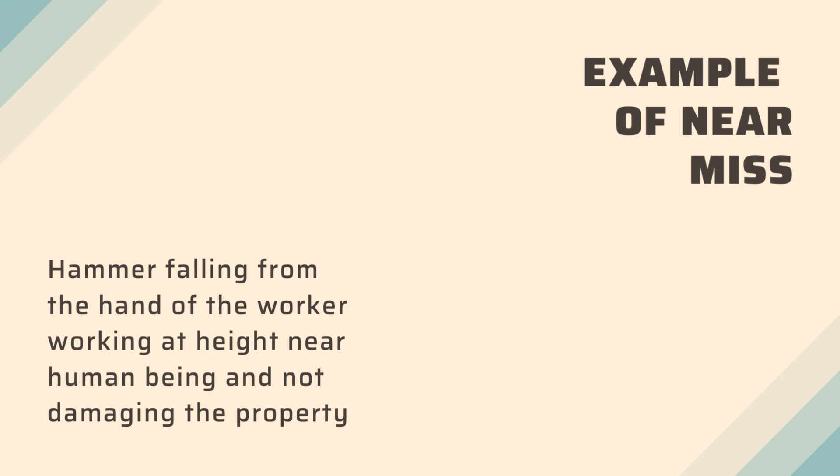An example of a near miss is a hammer falling from the hand of a worker working at height, near a human being, but not damaging any property and not causing any harm to the person working in that area. This is a type of near miss accident.